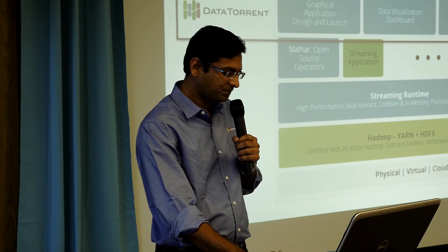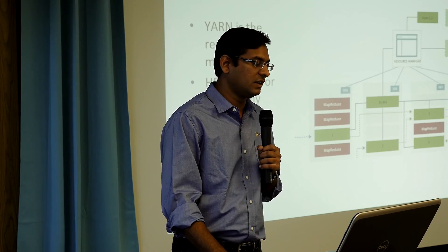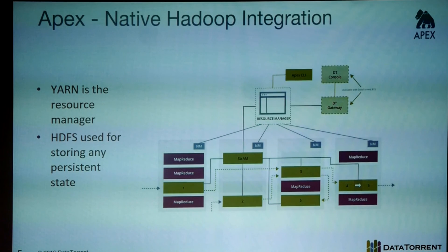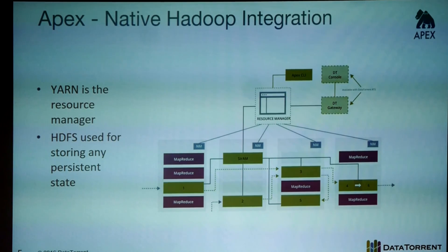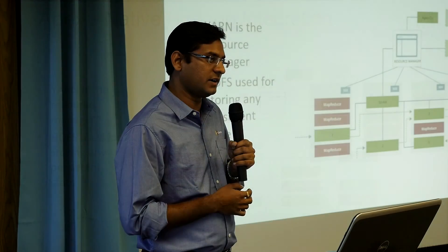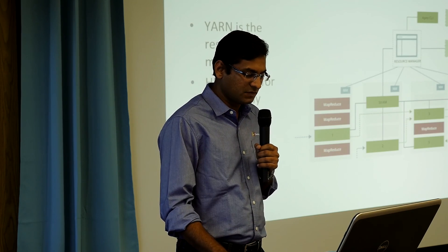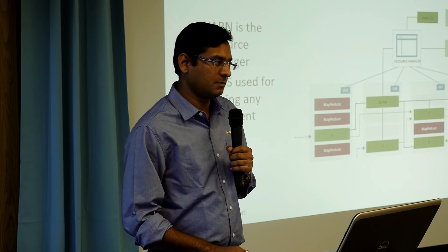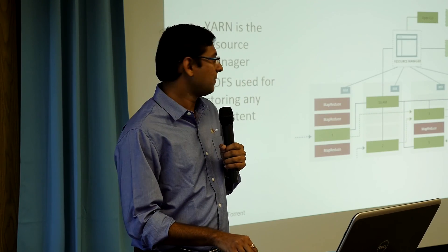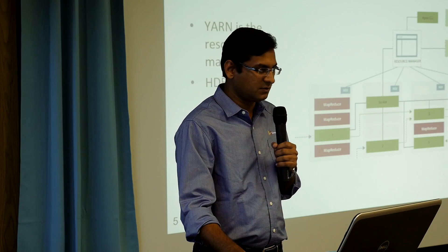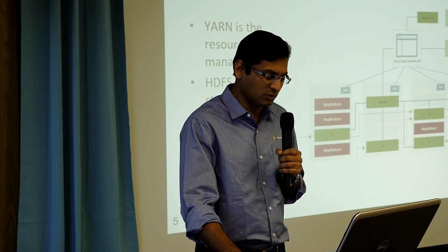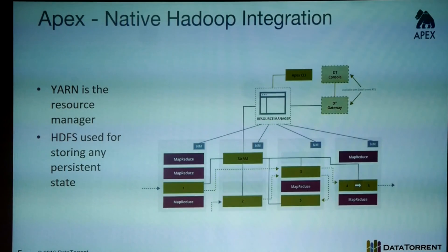Now let's see how Apex natively integrates with Hadoop. There are two ways to start a streaming application. One is the Apex CLI, which is part of open source, and the other is the DT Gateway, part of DataTorrent RTS. Both talk to the resource manager, which is part of Yarn, and make sure the application is started. You can think of this as a virtual cluster with four Hadoop nodes, each with a node manager. The resource manager launches an application master called STRAM on one of the nodes.